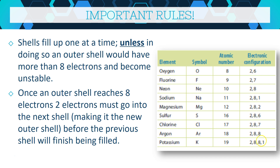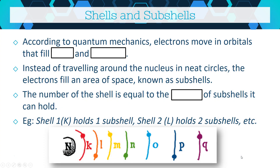We're going to move from shells to looking at what we call subshells. Each shell is actually composed of smaller energy levels — a shell is more like an energy range rather than a precise level, and subshells are those specific energy levels within it.